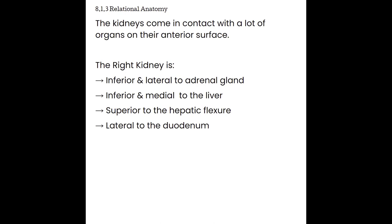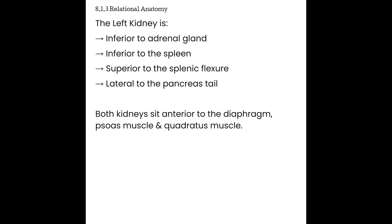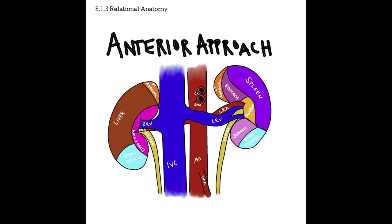With the kidneys being medial in the body at the lower portion of the abdominal organs, they come in contact with many organs on their anterior surface. The right kidney is inferior and lateral to the right adrenal gland, inferior and medial to the liver, superior to the hepatic flexure, and lateral to the duodenum. The left kidney is inferior to the left adrenal gland, inferior to the spleen, superior to the splenic flexure, and lateral to the pancreas tail. Both kidneys sit anterior to the diaphragm, psoas muscle, and quadratus muscle.